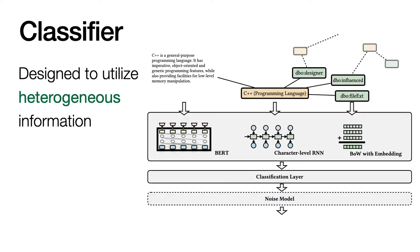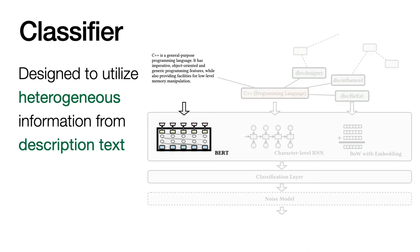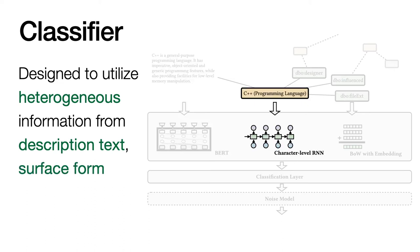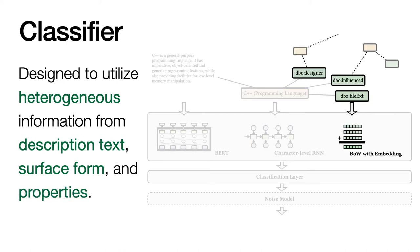The classifier we used was designed to utilize the heterogeneous information about an entity. The text description of an entity, which is captured by BERT. And the surface form of an entity, captured by a character-level RNN. And finally, graph structures such as properties of an entity, captured by a bag-of-word model.